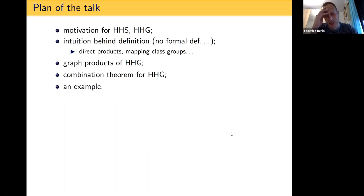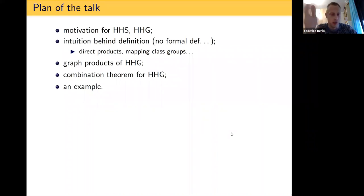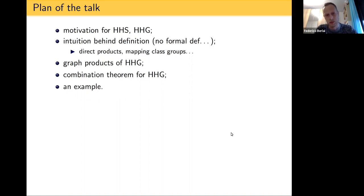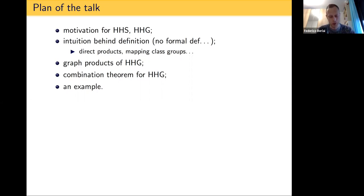The mapping class groups of surfaces of finite complexity are one of the canonical examples of hierarchical hyperbolic groups. We will see what can be extracted from the mapping class group case to be generalized to the HHG scenario. After this introduction part, we will state the result that the graph product of HHGs is again an HHG, and we will see that this result on graph products is deduced from a more general combination theorem for graphs of groups or amalgamated free products of HHGs.